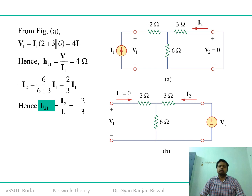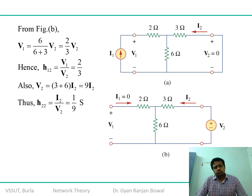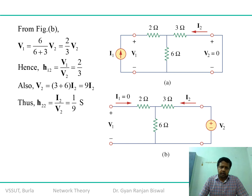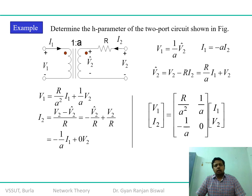Writing the node equation with the output terminal shorted, H21 = I2/I1 = −2/3, a dimensionless forward current gain. For H12 (reverse voltage gain), V1/V2 with input open gives 6/(6+3) = 2/3, dimensionless. For H22, keeping I1 = 0, the output admittance is 1/9 Ω⁻¹ (siemens).